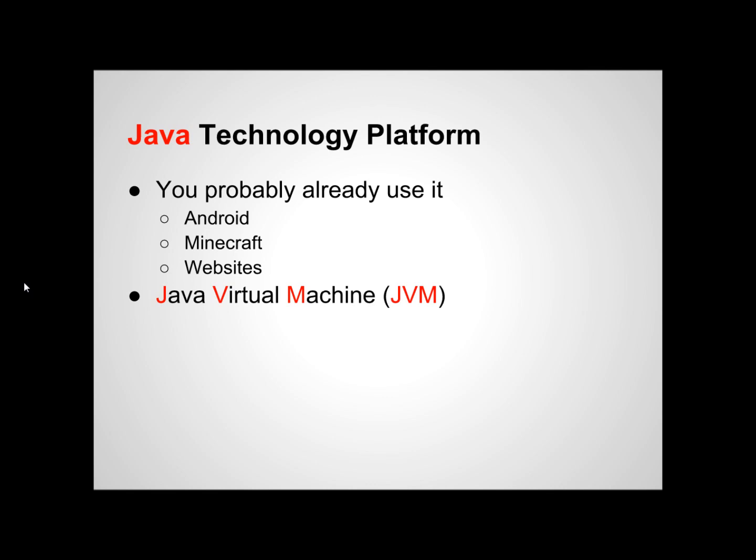If you ever needed to download Java to use any of these things, one key component that's included with this download is the Java Virtual Machine, or the JVM for short. This is a piece of software that allows Java code to run on your machine. We'll get back to this later.